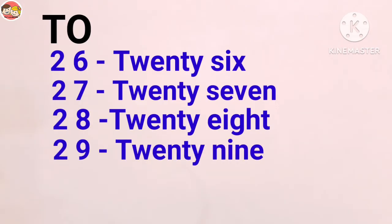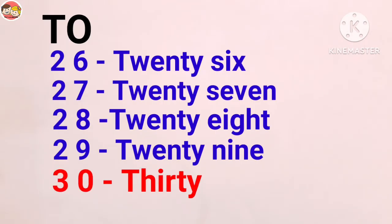Twenty-nine, 29: T-W-E-N-T-Y N-I-N-E. Twenty plus nine, 29. Next, what comes after 29? 30. Three zero, 30: T-H-I-R-T-Y. 30 is different, so we need to memorize the spelling.